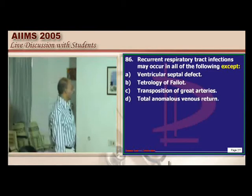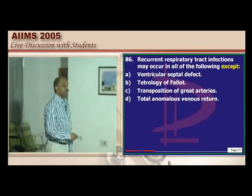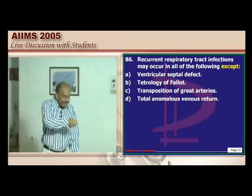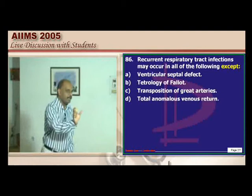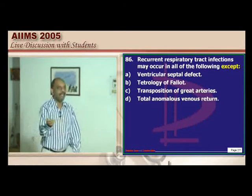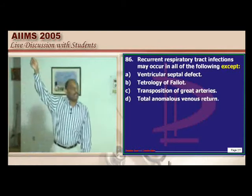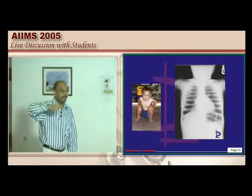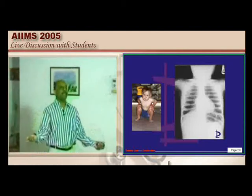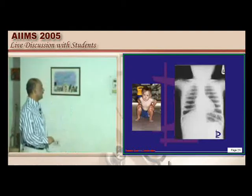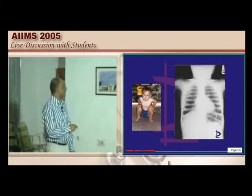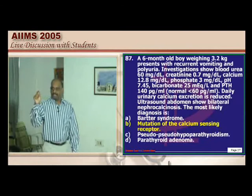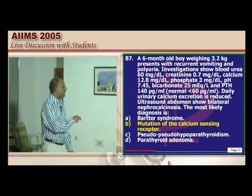Recurrent respiratory tract infections are seen with pulmonary plethora, not decreased pulmonary flow. In pulmonary atresia (TOF), right ventricular blood can't easily enter pulmonary circulation — no pulmonary plethora, hence no recurrent respiratory infections. In ASD, left-side blood enters the right atrium, goes to the right ventricle, and into the pulmonary circulation, causing pulmonary plethora and recurrent respiratory infections. TOF children show squatting episodes; chest radiograph shows scant pulmonary circulation.